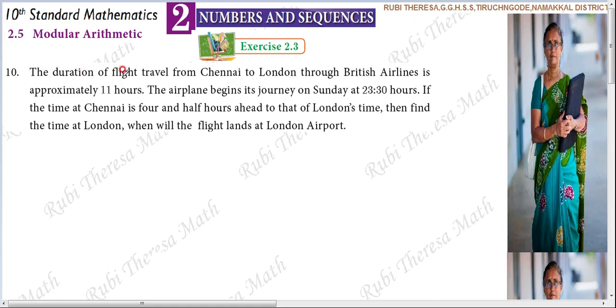So the duration of flight — flight travel from Chennai to London. One of the starting points we have is Chennai, and the ending arrival point, we have the destination London.